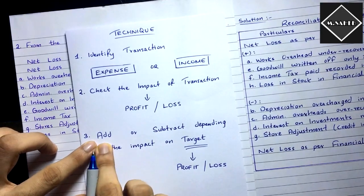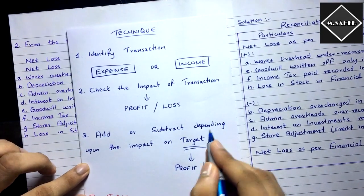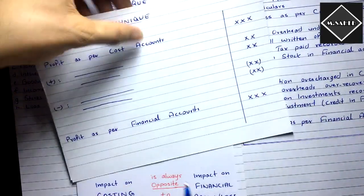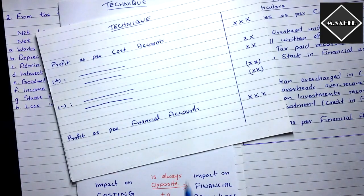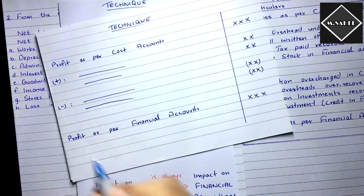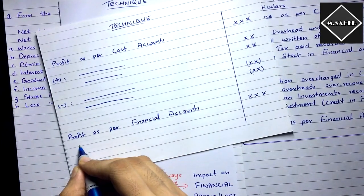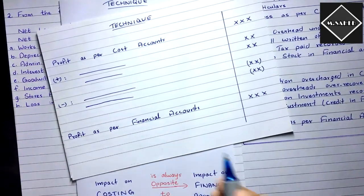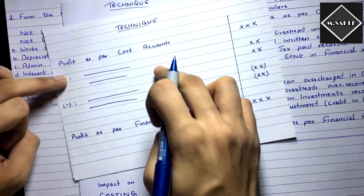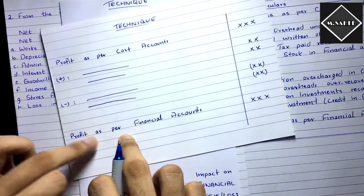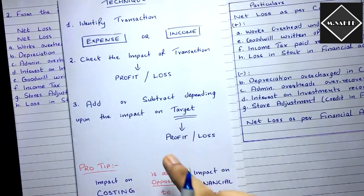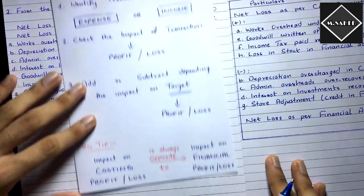Third, add or subtract the transaction depending upon its impact on the target profit or loss. Whatever effect the transaction has on the target — if the impact is positive, add it; if negative, subtract it. That's the technique. The pro tip: whatever impact a transaction has on costing profit or loss, the impact on financial profit or loss of that same transaction will always be exactly opposite.